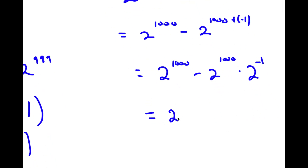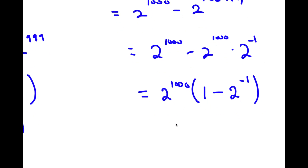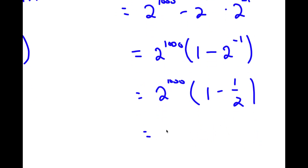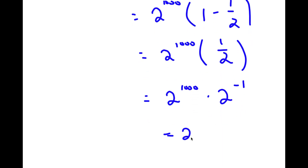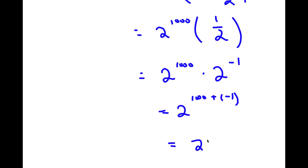Factoring out 2^1000, I get 2^1000 · (1 - 2^(-1)). Since 2^(-1) = 1/2, this becomes 2^1000 · (1 - 1/2) = 2^1000 · 1/2, which equals 2^1000 · 2^(-1) = 2^(1000 - 1) = 2^999.